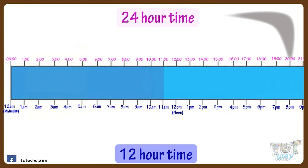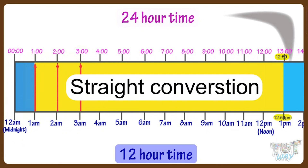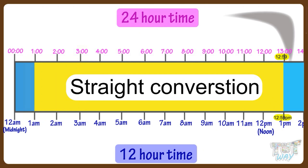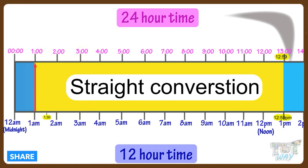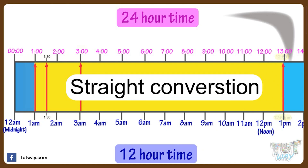From the time 1 a.m. to 12:59 p.m., it is a straight conversion from the 12-hour clock system to the 24-hour clock system — we just need to remove the a.m. or p.m. symbol. For example, 1 a.m. is 1 o'clock, 1:30 a.m. is 1:30, and 3 a.m. is just 3 in the 24-hour clock system. The same is true up to 12:59 p.m.